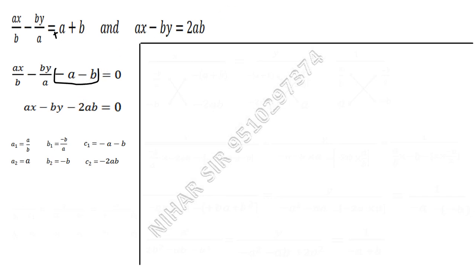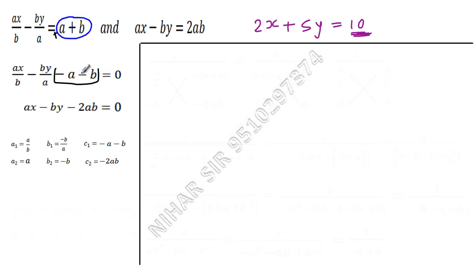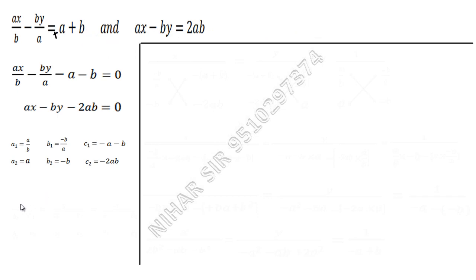You might wonder how to decide which values to take together in the exam. In a linear equation like 2x plus 5y equals 10, the last term is the constant, so it is taken as c1. Whatever is left after the x and y coefficients is taken as c1.